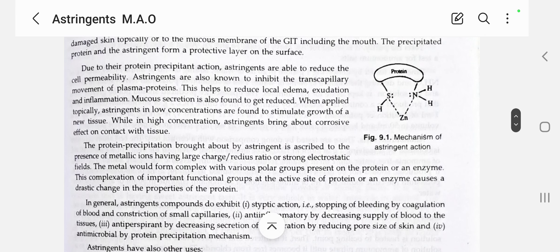The protein precipitation brought about by astringents is ascribed to the presence of metallic ions having large charge or radius ratio or strong electrostatic field. The metal would form complex with various polar groups. For example, the metals we have in astringents that we study under pharmaceutical inorganic substances like alum, which is a mixture of sulfate of potassium and aluminum, and another example is zinc sulfate. These metals form complexes with various polar groups present in the protein.